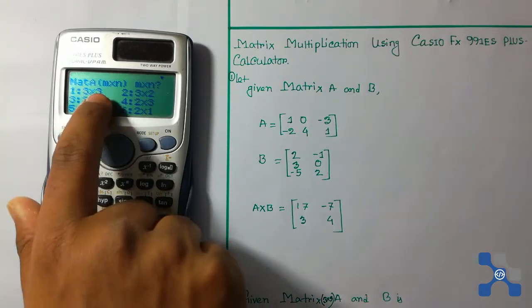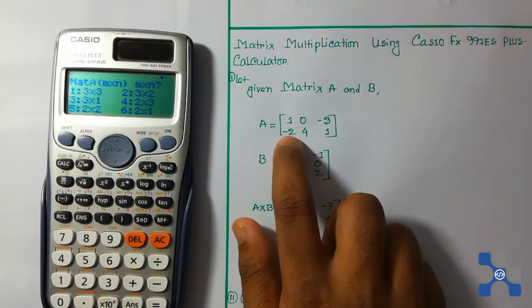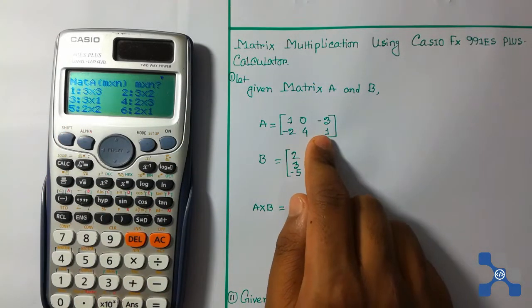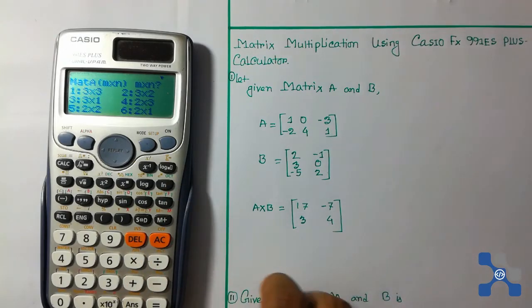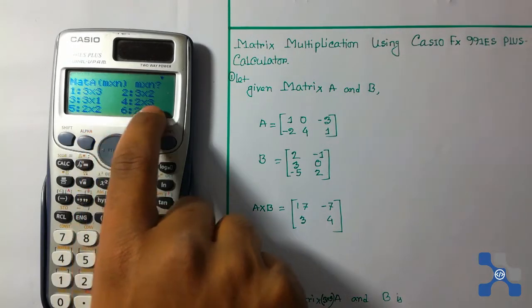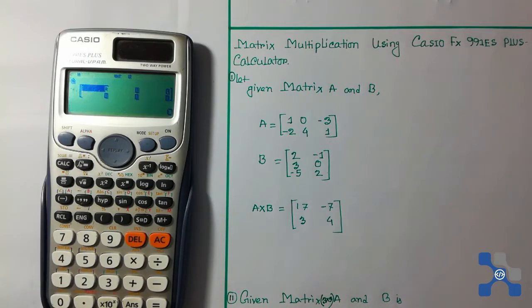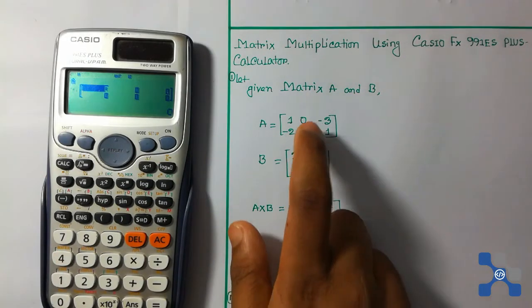The options are 3x3, 3x2, and 3x1. Our given matrix is 2x3, so we need to select 2x3. Press 4 for 2x3. Now we need to put all the elements into the calculator.